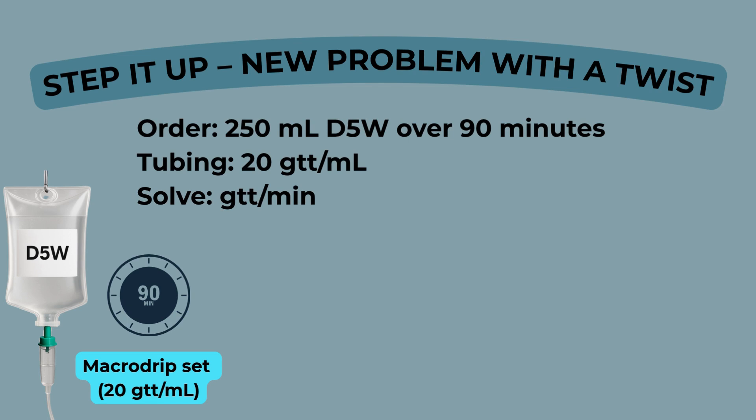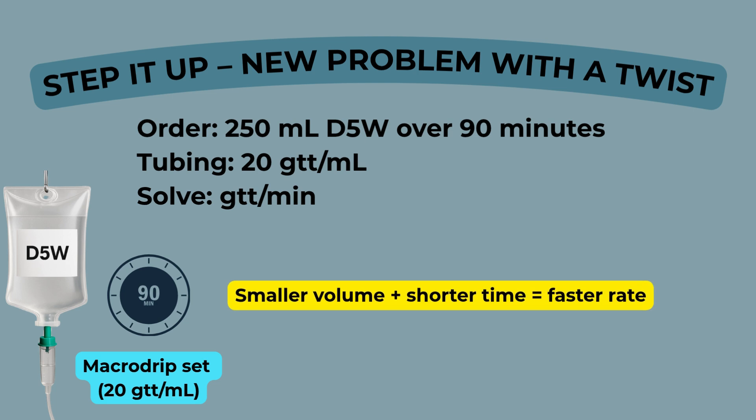Let's try one that's a little trickier. You're ordered to infuse 250 milliliters of D5W over 90 minutes using a 20 drops per milliliter macro drip set. This setup requires careful math, but the method stays the same: convert your time, set up your dimensional analysis, and solve for drops per minute.